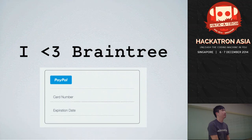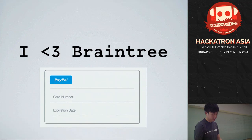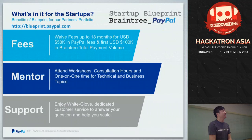Last but not least — are any of you startup founders or employees? There's an initiative at PayPal and Braintree called the Startup Blueprint. It's a program where startups can enroll and get benefits like waived transaction fees — free for up to 18 months, up to $50,000 USD in PayPal transactions or $100,000 USD for Braintree.